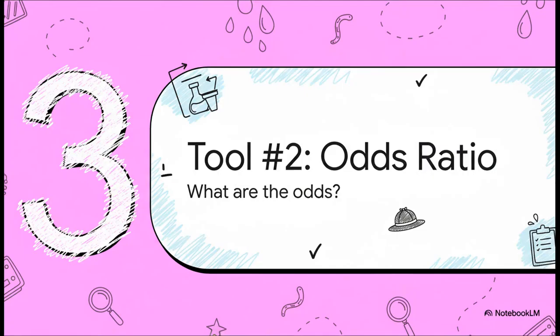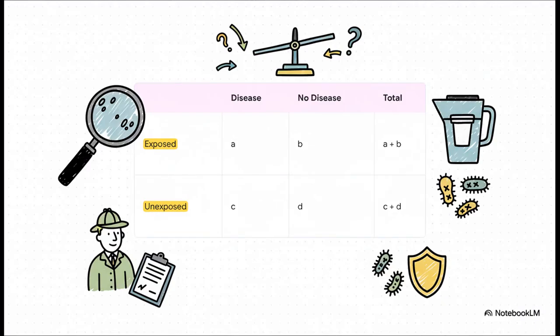Okay, let's grab another tool from the kit. This one is called the odds ratio, or OR. It's a close cousin to relative risk, but it looks at the problem from a slightly different angle. Instead of comparing the risk, it compares the odds. Let me show you what I mean. And hey, good news. We use the exact same table. No new data needed. We're just going to slice and dice it a little differently.